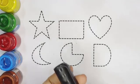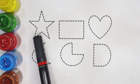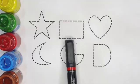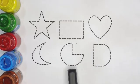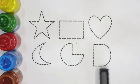This is black color. Star, rectangle, heart, moon, pie, D. Kids, let's draw the shapes.